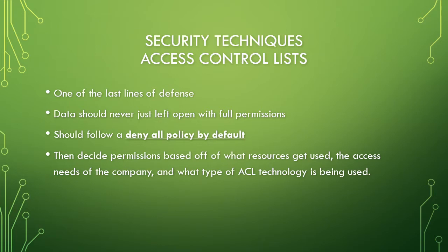The second security technique is access control lists. This is one of the last lines of defense if a hacker is already inside, because it can prevent them from just accessing or doing whatever they want. You need to use a deny-all policy by default. This keeps everyone incapable of doing things unless you specifically set it up otherwise. That means you can choose who's allowed to edit things, who's allowed to see things, and who's allowed to manage things overall. If a hacker gets in, they're not going to be able to see, edit, or change anything by default if you have a strong access control list. You do need to make sure you manage the access control list based on the needs of the company and the technology you're using.